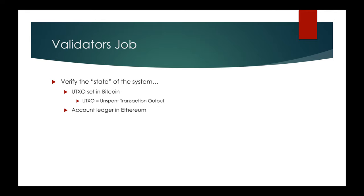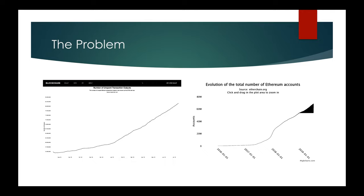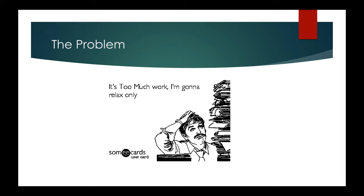More precisely, the job of a validator is to verify that the state of the system is consistent with time. The state of the system for a blockchain like Bitcoin would be the entire set of UTXOs, and in a blockchain like Ethereum would be the entire account ledger. This means that in order to verify the state, the validator would have to store the entire state, and the state has been growing rapidly, running into millions of UTXOs or Ethereum accounts.